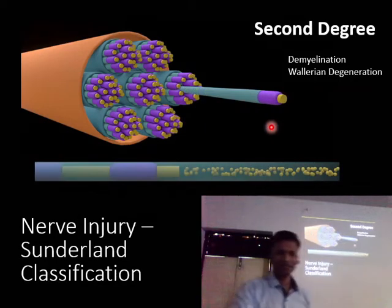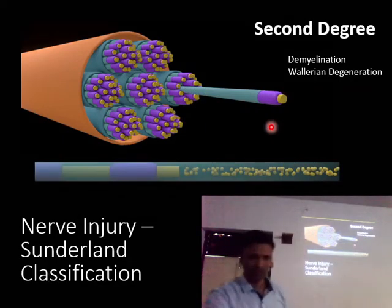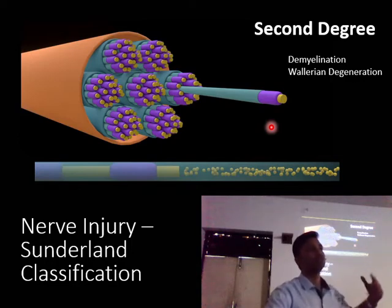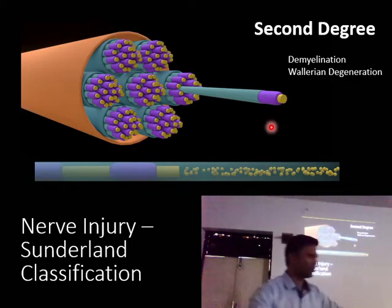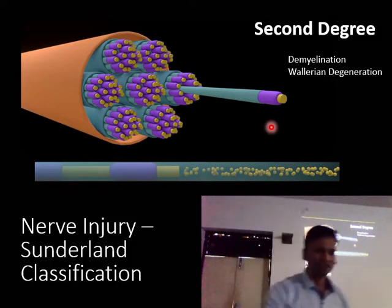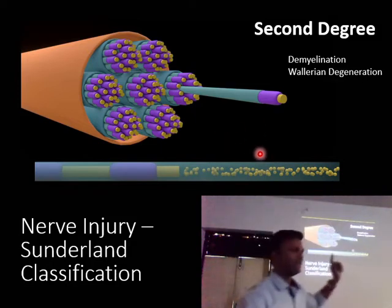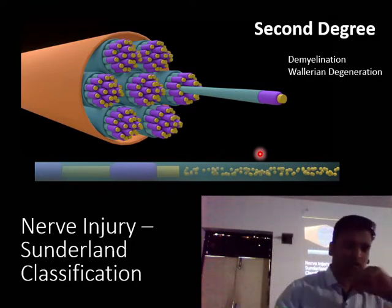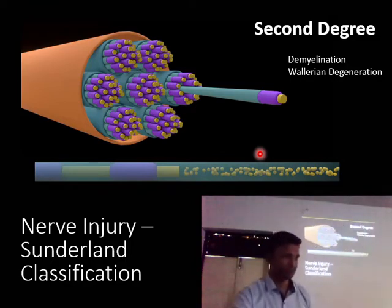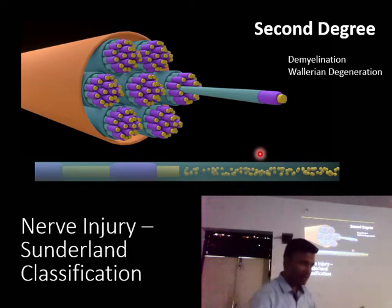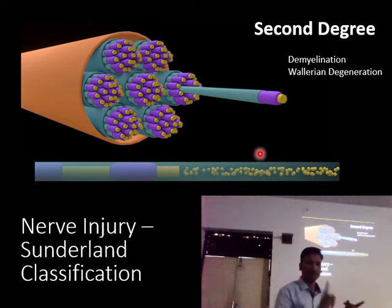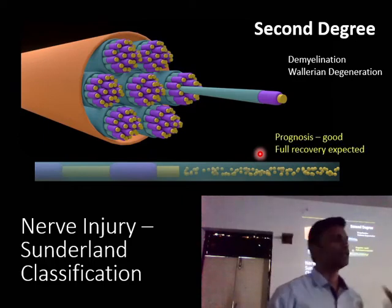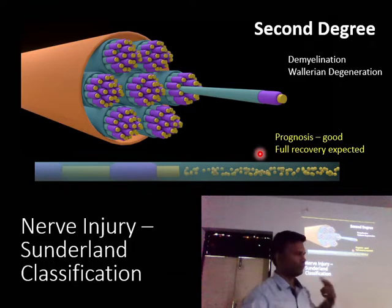In Sunderland's second degree, we see demyelination along with Wallerian degeneration. Again, we have an intact endoneurium. The axon is damaged and the myelin sheath is damaged, but the endoneurium is intact, so we expect a very good prognosis with full recovery.